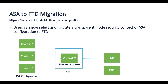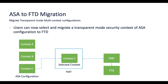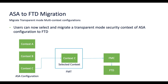With the new version, users will now be able to migrate transparent mode security contexts from ASA to FTD, along with the routed mode security contexts. The transparent mode includes the migration of the BVI interfaces associated with the bridge groups containing interfaces that the ASA bridges.